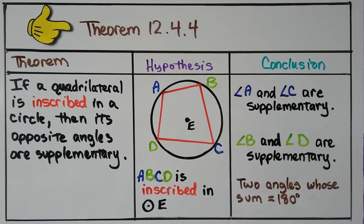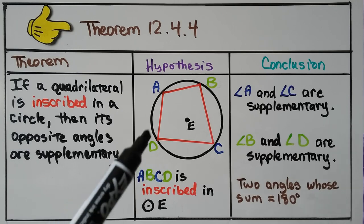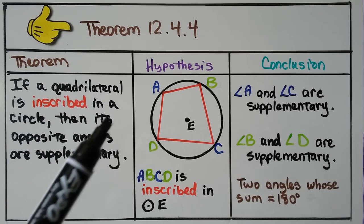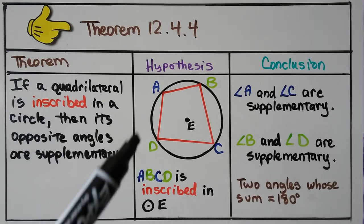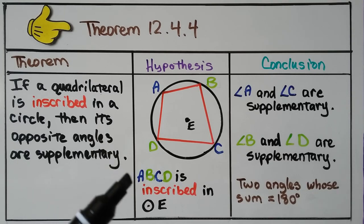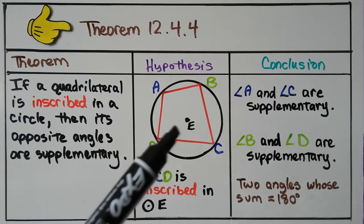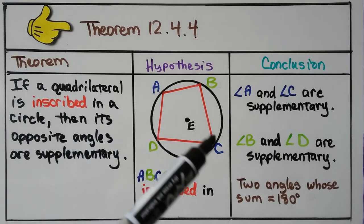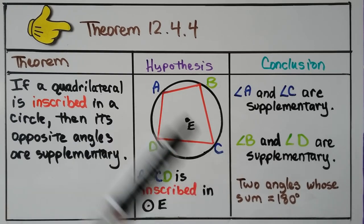For your notes, I have another theorem for you, 12.4.4. The theorem says if a quadrilateral is inscribed in a circle, then its opposite angles are supplementary. Here we have this red quadrilateral inside of the circle, and we can see that ABCD is inscribed in circle E. Our conclusion is that angle A and angle C are supplementary,